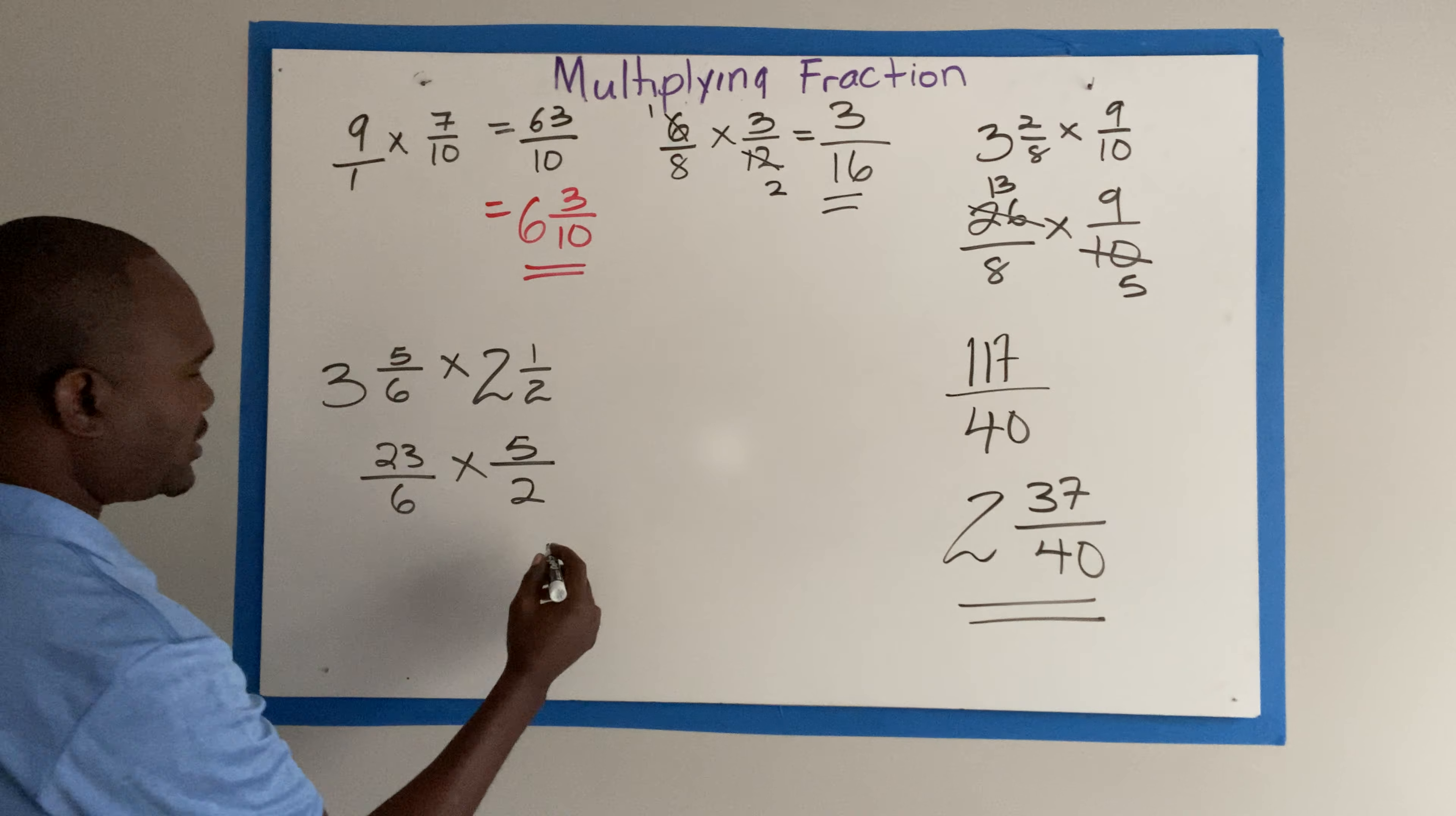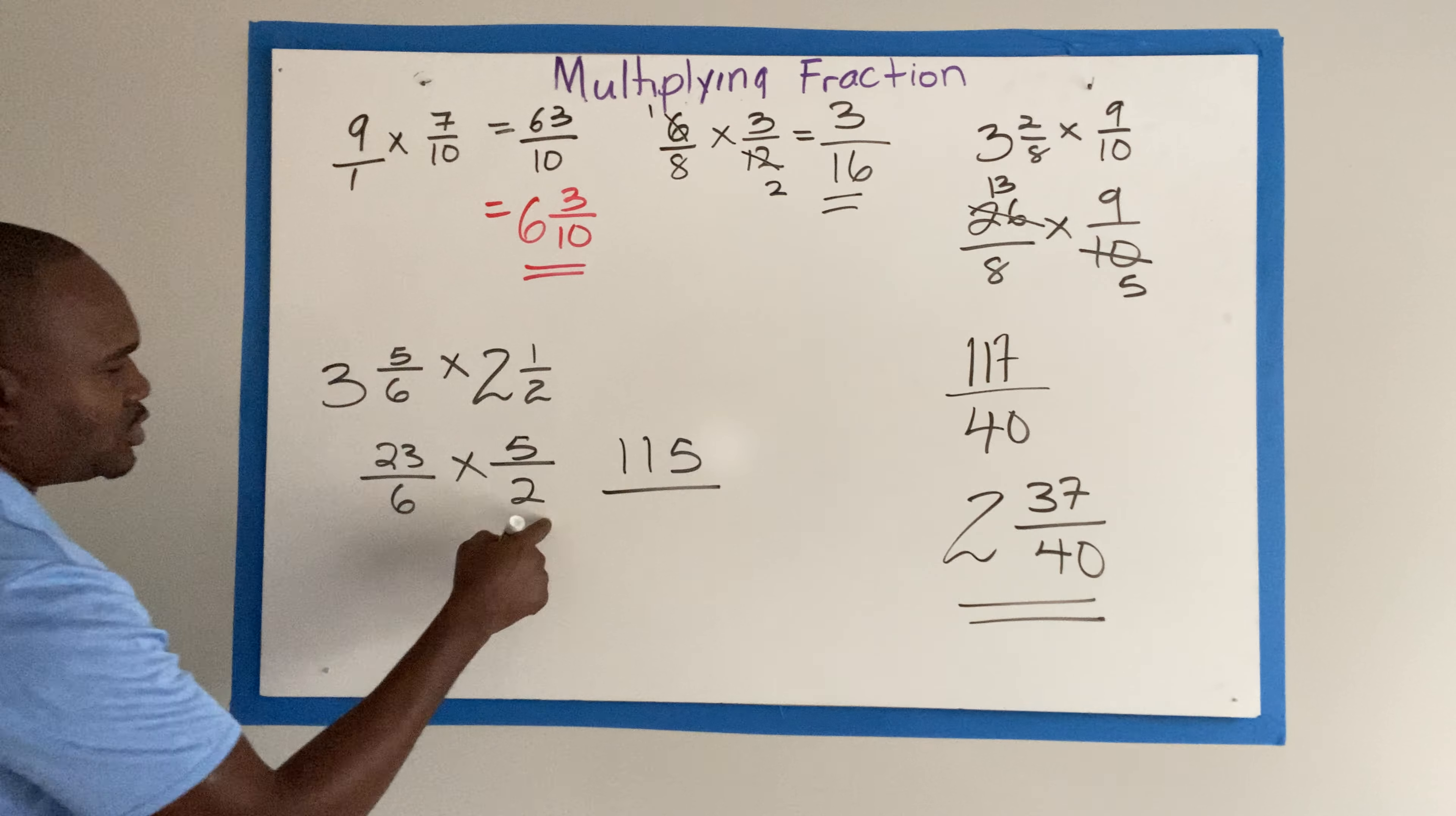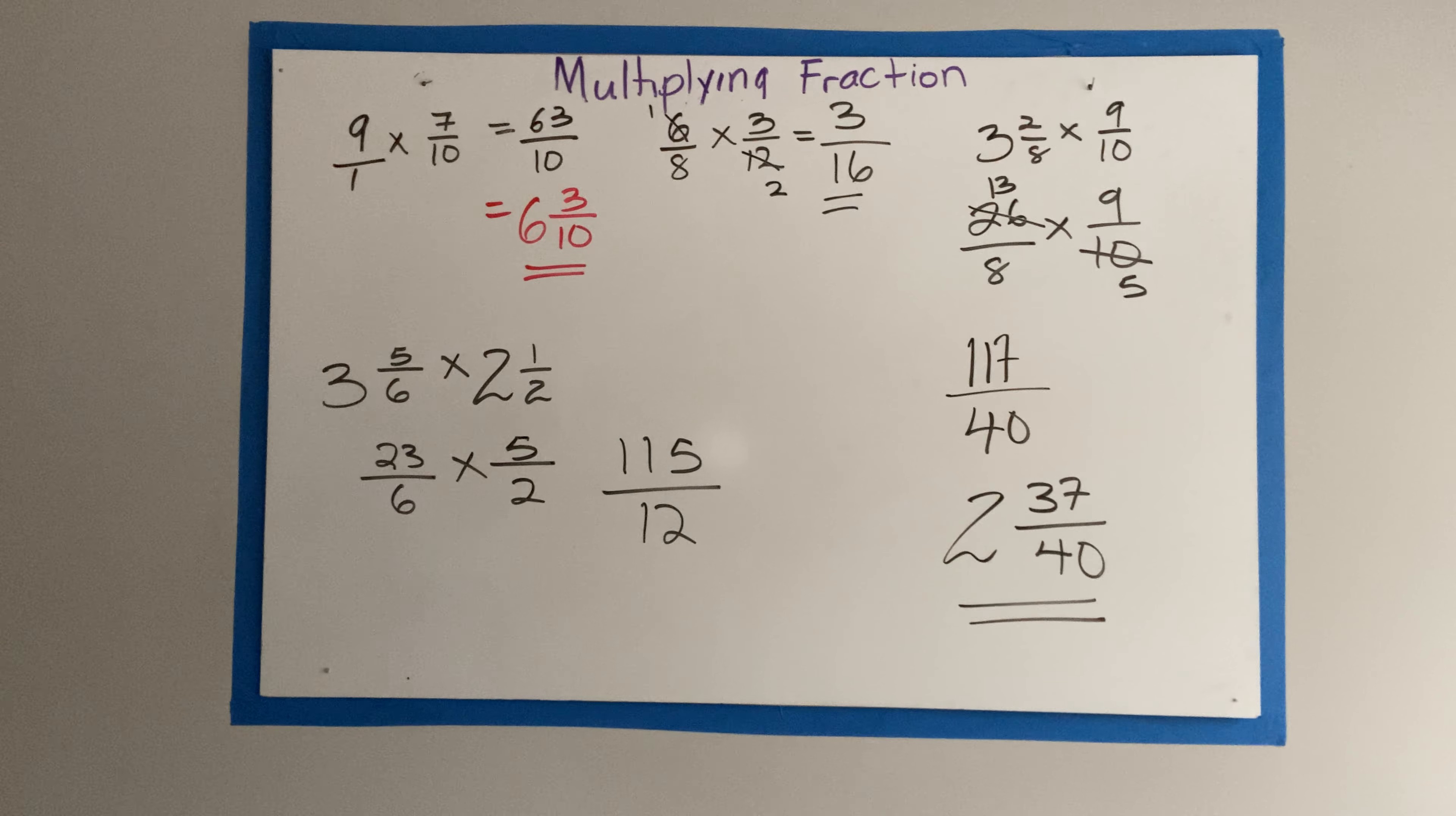5 threes, 15. Carry on. 5 twos, 10 and 1, 11. 6 twos, 12. Now we'll find out how many times can 12 go into 115.